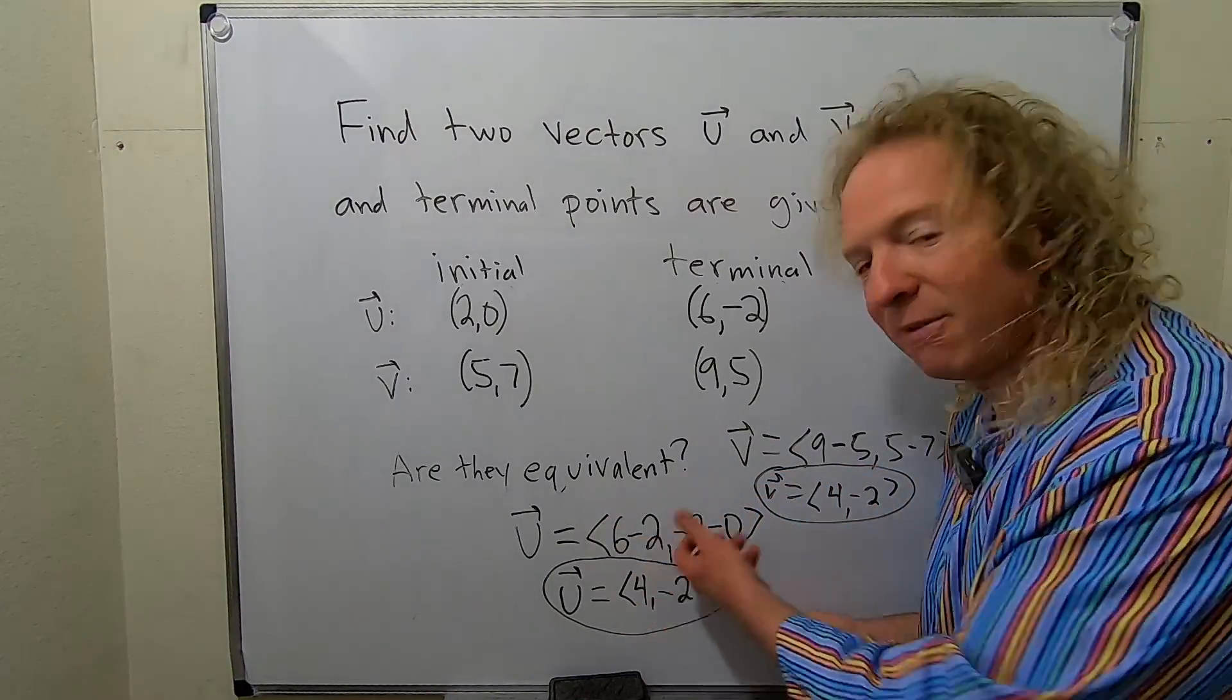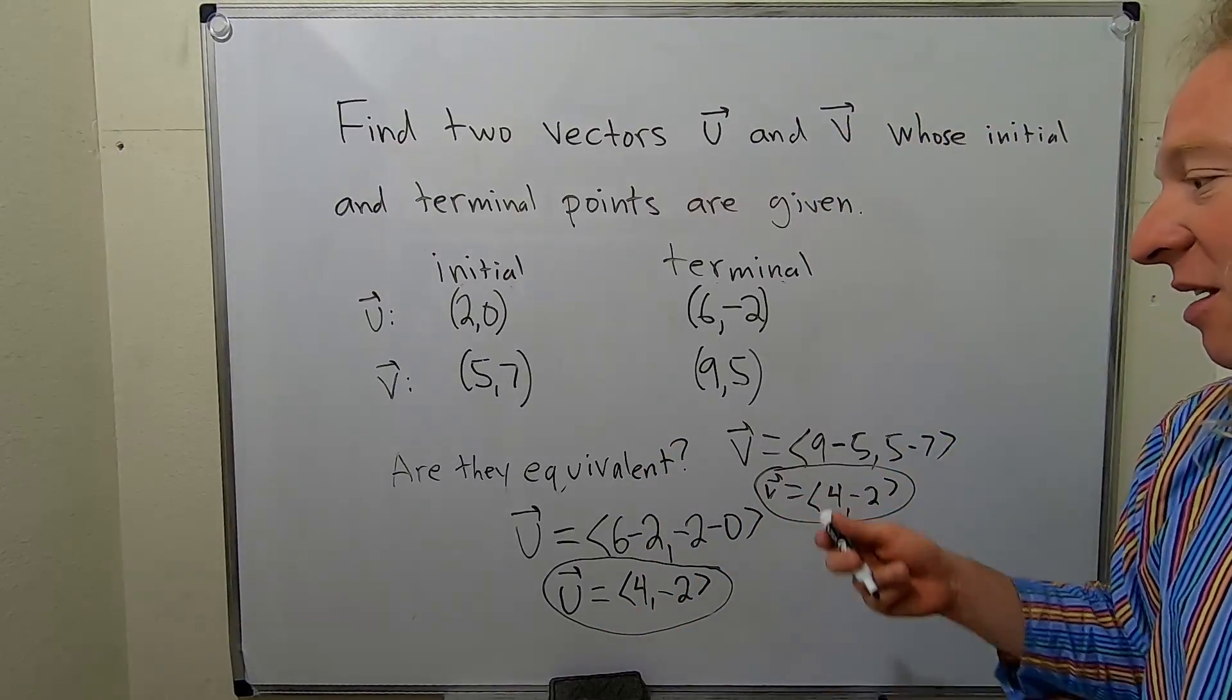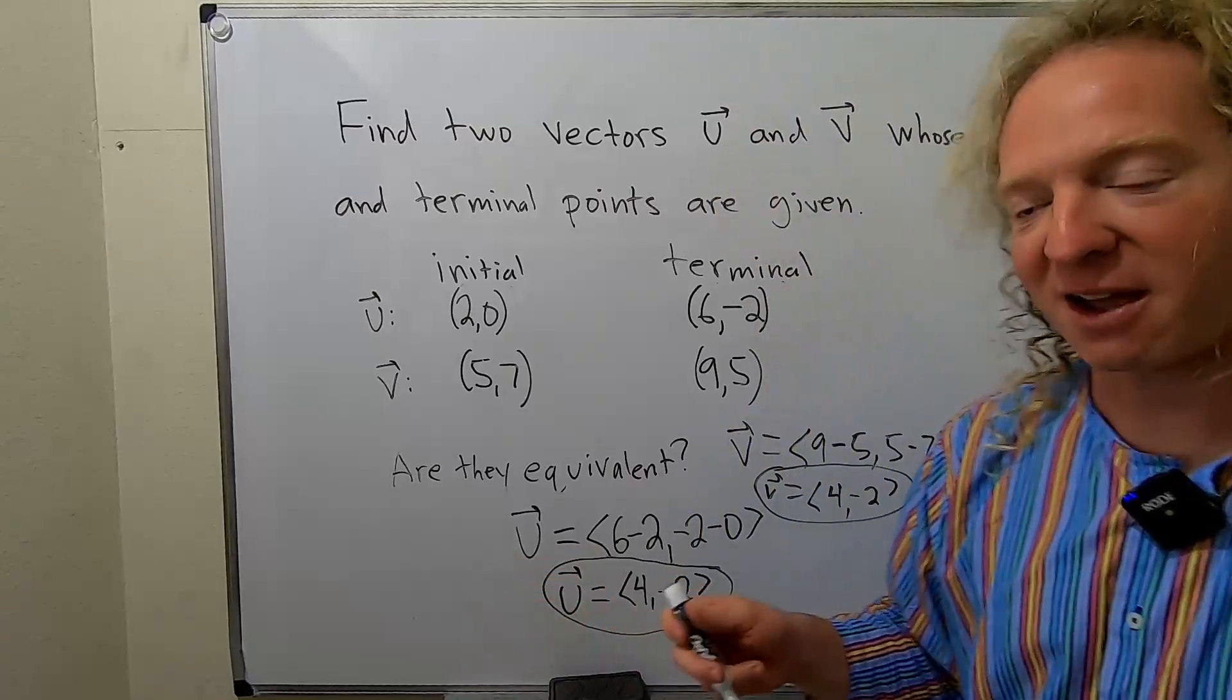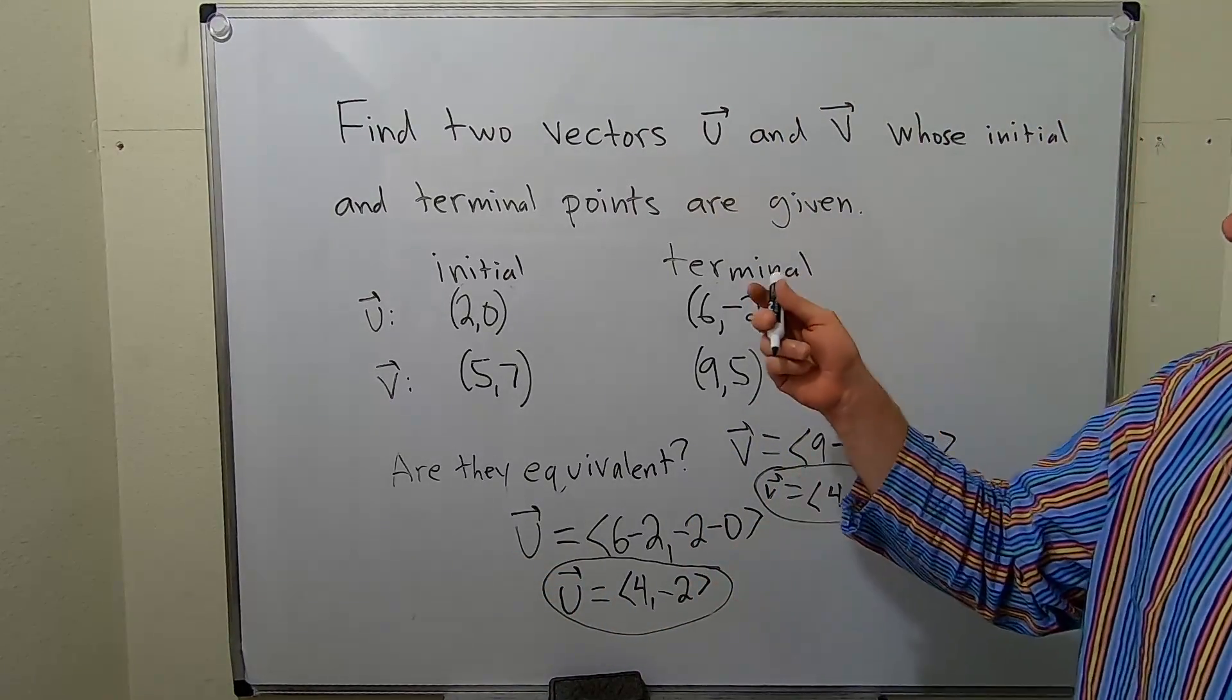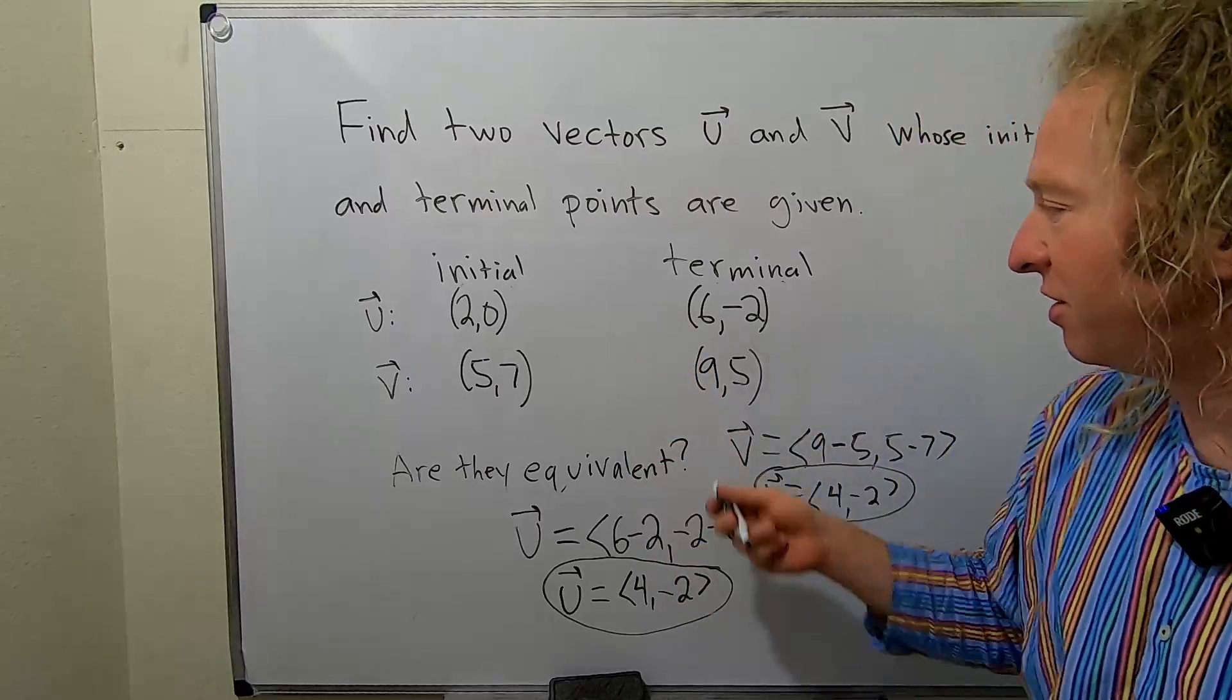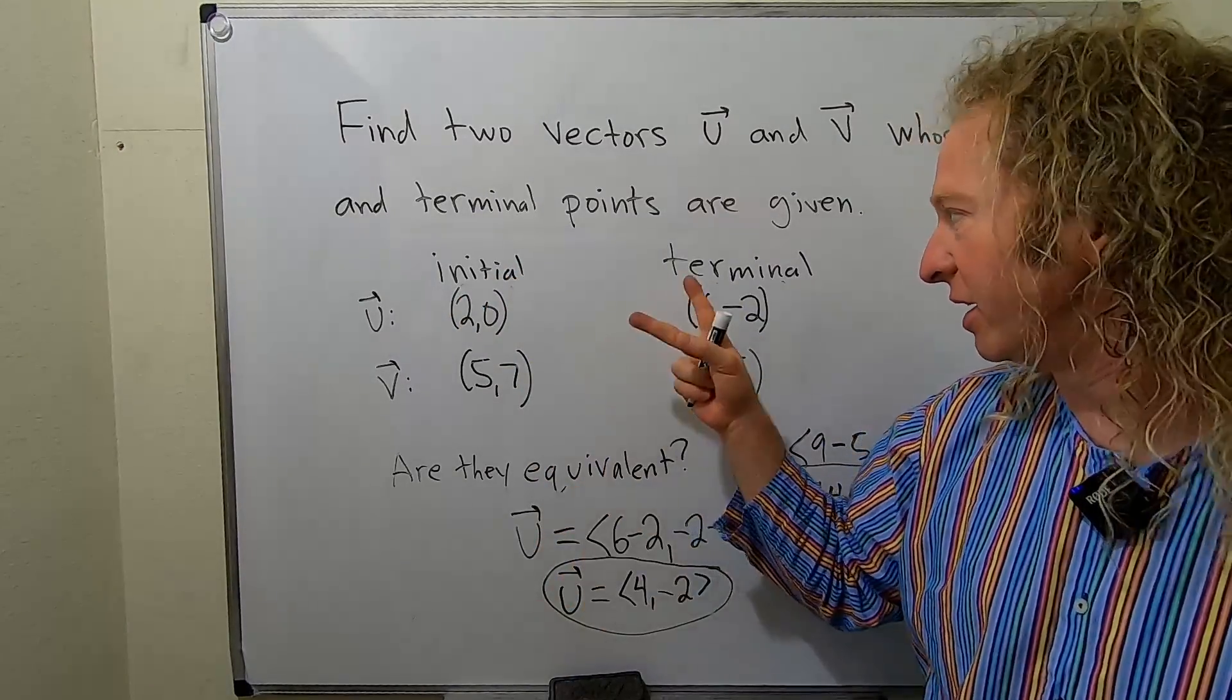These are exactly the same vector—the same components and everything. So yes, they are equivalent. Two vectors are equivalent if they have the same magnitude and direction. You might say, well, they're the same, so obviously they're equivalent. The question is really asking about these. These vectors u and v are the same—it's the same vector, just in a different place.